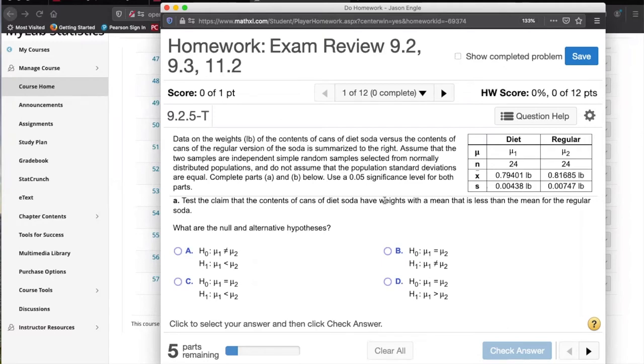Okay, so if I'm hearing you right, you were able to do part A and your question is about the next part? Okay, all right, let me catch up with you. So data on the weights of the contents of cans of diet soda versus regular—this is independent simple random samples from a normally distributed population. Do not assume that the independent or that the population standard deviations are equal. Okay, so test the claim that the contents of the cans of diet soda have weights with a mean that is less than the mean for the regular.